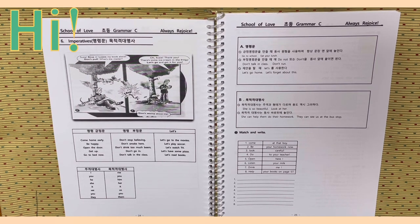B, 목적격 대명사. 목적격 대명사는 주격과 형태가 다르며 용도 역시 그러하다. She is so beautiful. 이건 주격이죠. Look at her. 목적격 대명사는 동사 일반적으로 바로 뒤에 놓인다. She can help them do their homework. They can see us at the bus stop.